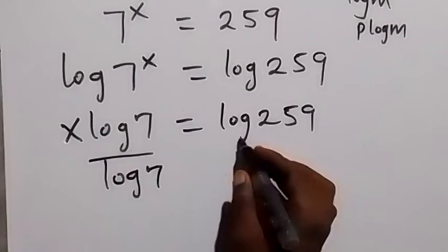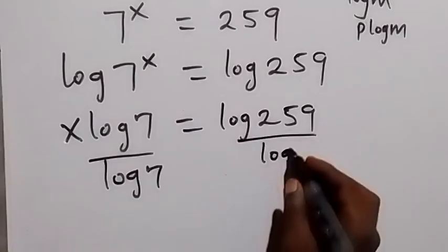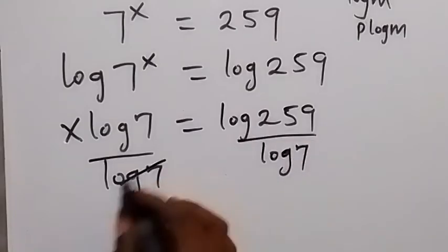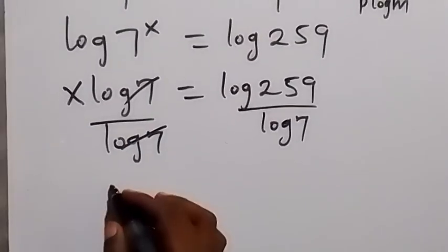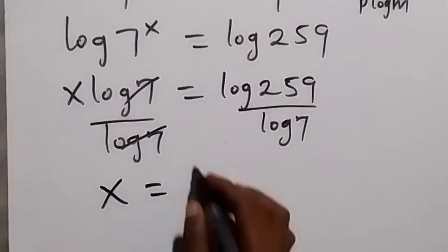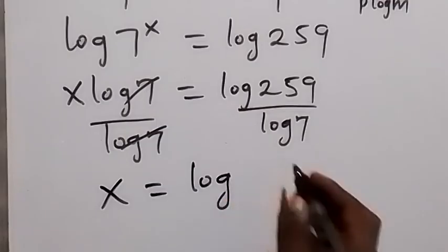Divide this side by log 7 such that log 7 will cancel each other here. And then what we have here will become x equals to log 259 over log 7.